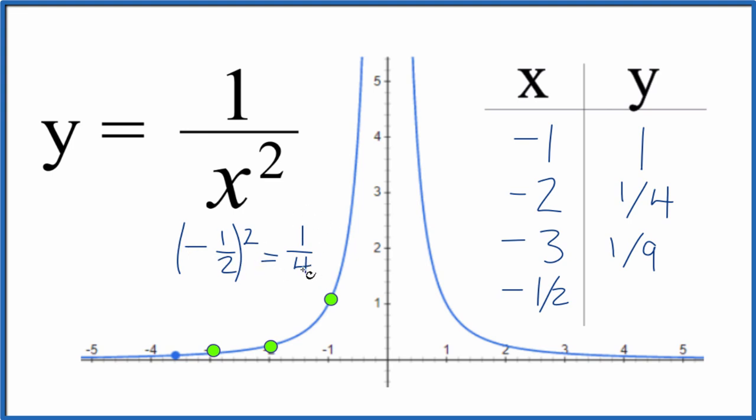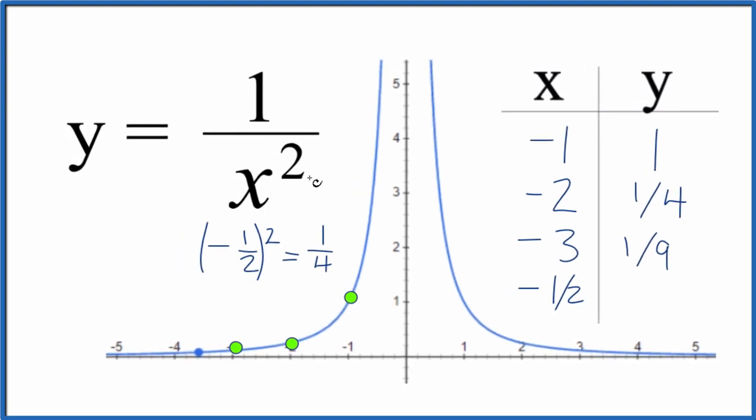We squared the negative, so now this is positive. y equals 1 over one fourth. 1 over one fourth equals 4.